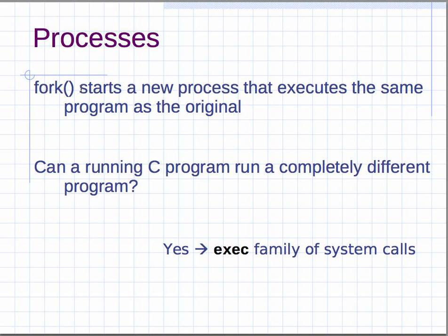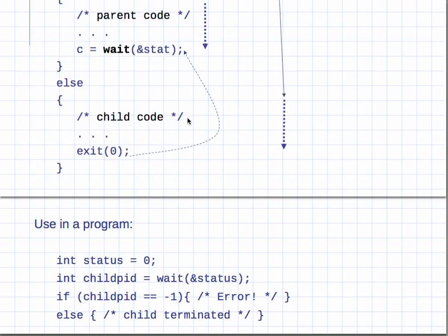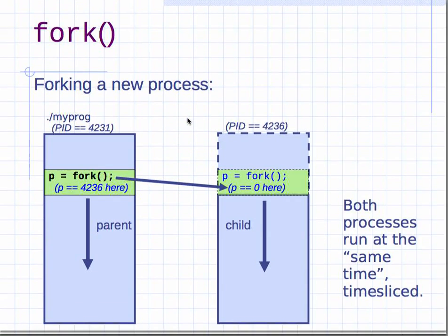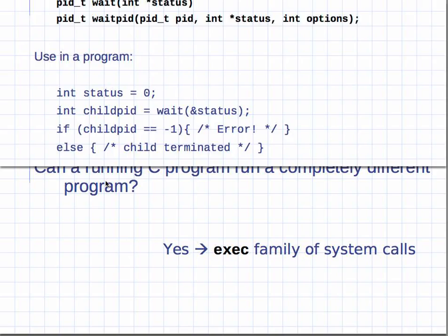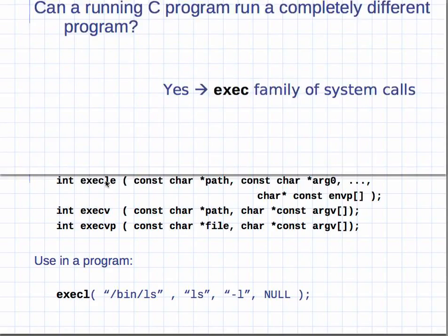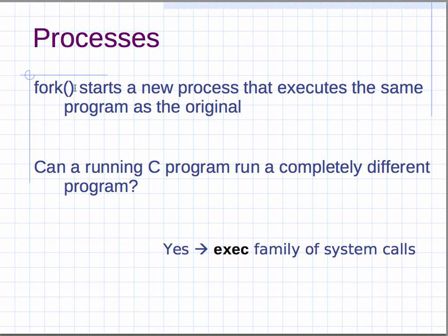Fork starts a new process that executes the same program as the original, but not from the beginning — from the point at which fork was called. When you call fork, it doesn't start a brand new process from the very top. All the code before fork in the parent is assumed to have already executed in the child as well. You start the child process and execution begins after the fork.